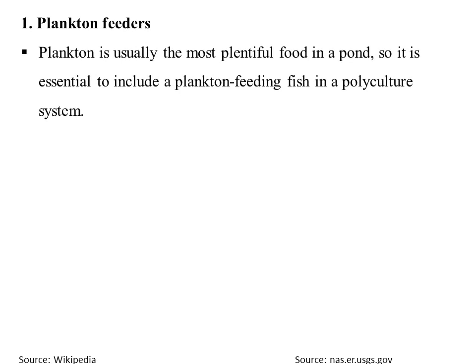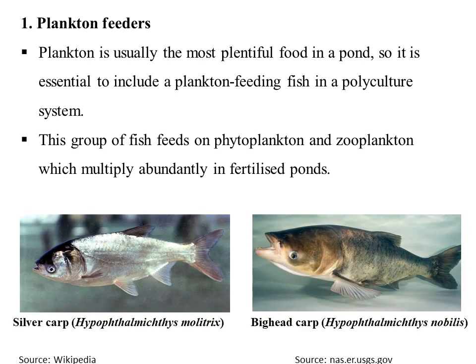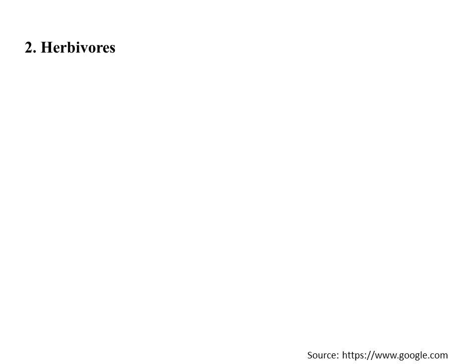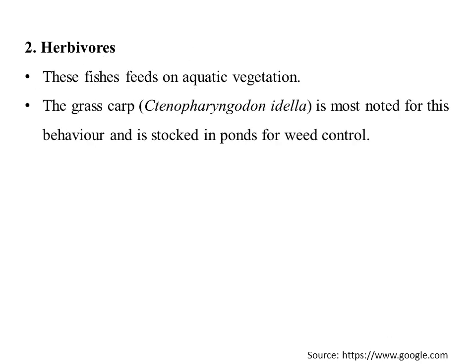The combination of fishes to be cultured in a polyculture system includes: first, plankton feeders — plankton is the most plentiful food source in a pond, so plankton-feeding fishes must be included. They feed on phytoplankton and zooplankton, which multiply abundantly in fertilized ponds. Silver carp and bighead carp are best examples. Herbivorous fishes are also introduced to feed on aquatic vegetation such as grasses and microalgae. Grass carp (Ctenopharyngodon idella) is a notable species stocked for weed control.